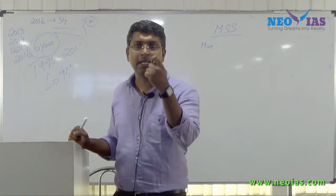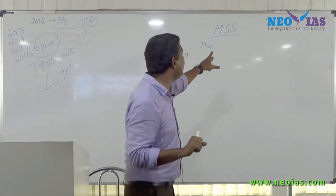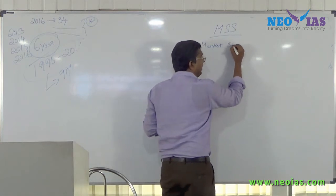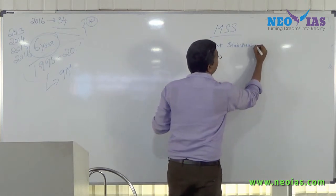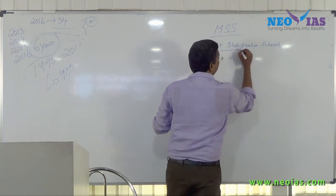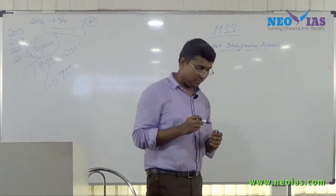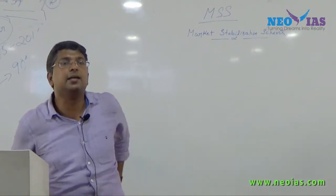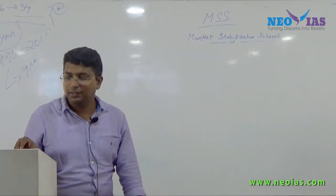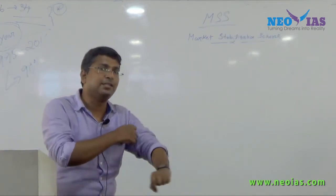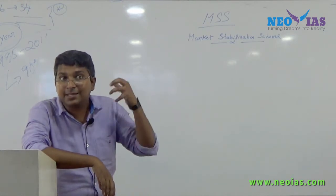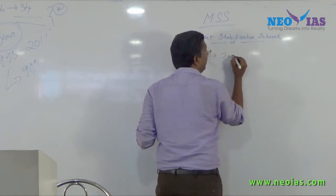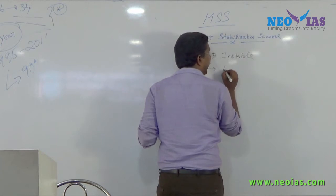Once you read the term itself you will get some idea what this mechanism is all about. The term is Market Stabilization Scheme, or MSS. This topic is under Money and Banking. The scheme is used by RBI when the market becomes unstable due to excess liquidity.